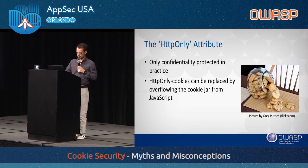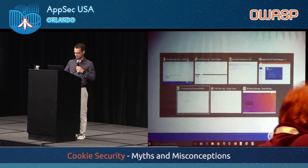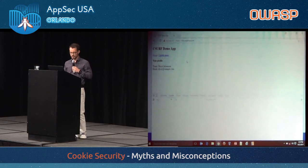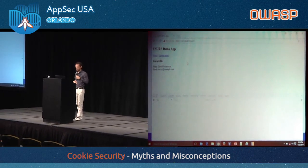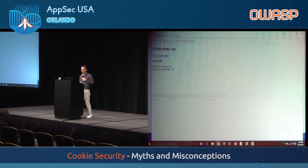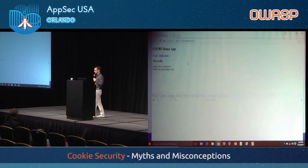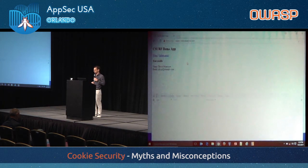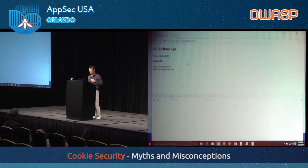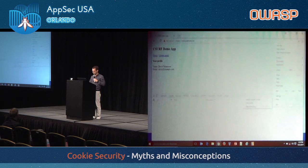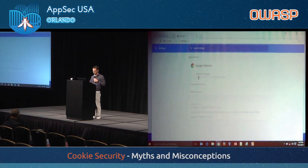Let's try to demonstrate that in a demo using Chrome. Cure53 published a good white paper on browser security this week, and it mentioned that cookie jar overflow is not possible in Chrome but is possible in Edge and IE. I'm going to try it in Chrome because it did work for me earlier this morning. I'm on Chrome 61, which I upgraded this morning, so it should be the latest version.